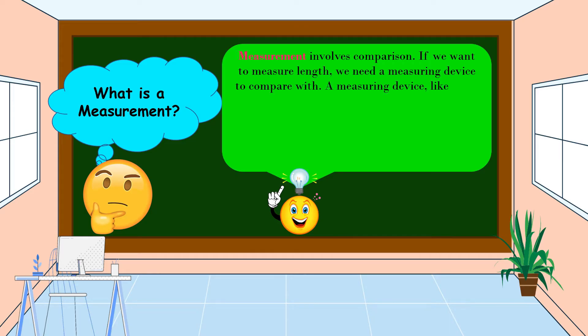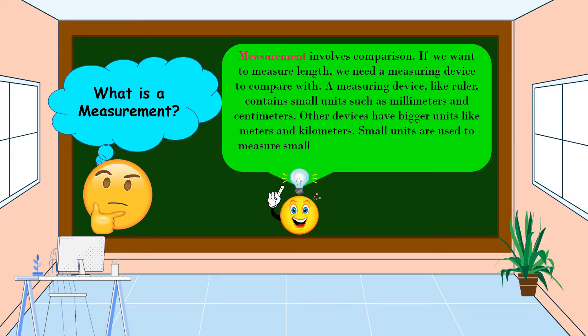A measuring device, like a ruler, contains small units such as millimeters and centimeters. Other devices have bigger units like meters and kilometers. Small units are used to measure small things and bigger units are used to measure larger things.